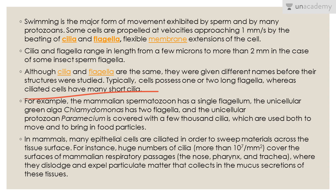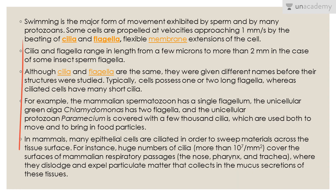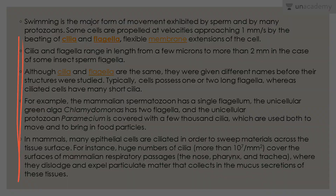In mammals, many epithelial cells are ciliated in order to sweep materials across the tissue surface. For instance, huge numbers of cilia cover the surface of mammalian respiratory passages, where they dislodge and expel particulate matter that collects in the mucous secretions of these tissues. These are some general factual details about cilia and flagella.